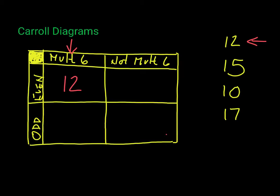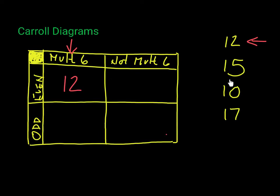Now, 15. Is it a multiple of six? No — 15 doesn't appear on the six times table, so it goes in one of the two right-hand boxes. Is it even or odd? Look at the last digit: 5 is not 0, 2, 4, 6, or 8, so 15 is an odd number. It's not a multiple of six and it's odd, so it goes in this box here.